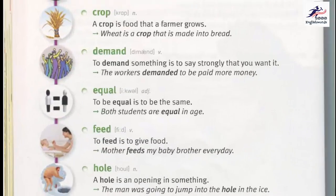Crop. A crop is food that a farmer grows. Wheat is a crop that is made into bread. Demand. To demand something is to say strongly that you want it. The workers demanded to be paid more money.